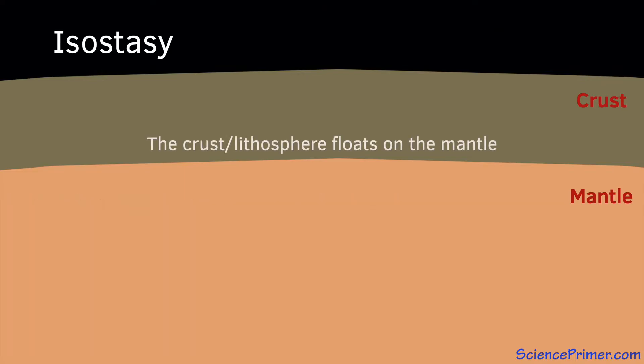The earth's crust is buoyant and floats on top of the mantle like a wooden block floats in water. Buoyancy is most widely understood in terms of displacement.